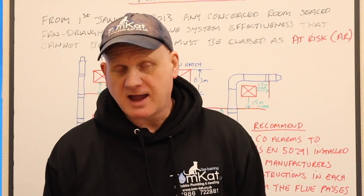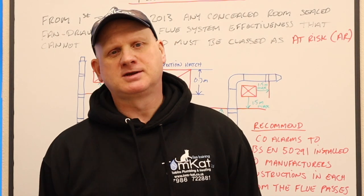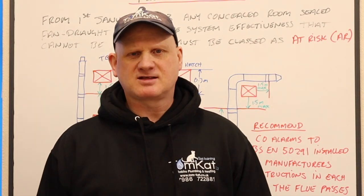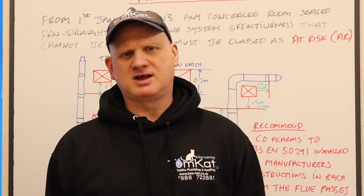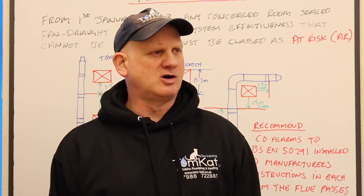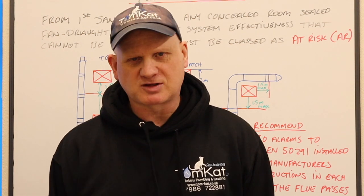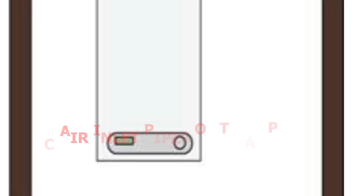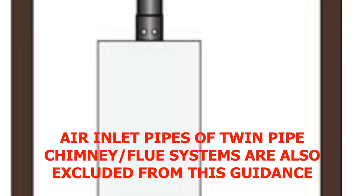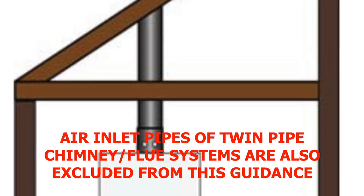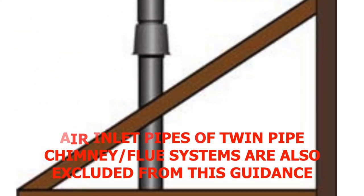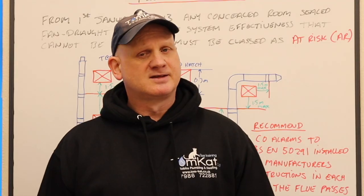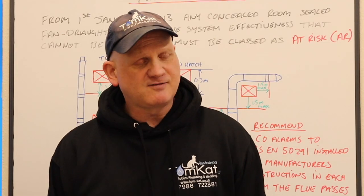What do we mean by a flue in a void? Basically, it's a flue system that's been boxed in from a room-sealed fan-assisted appliance. That doesn't mean back boilers or condensing boilers with a specialist flue system put down a chimney, or a flue system on a flat roof where it's a vertical flue going through the roof and you can see the joints. That's not what's considered a flue in a void.